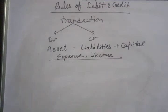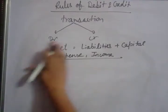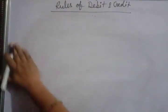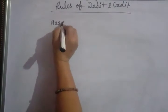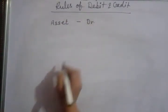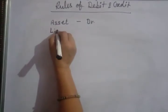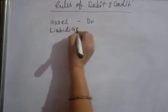Today we will see when assets have to be debited and credited. There are some simple things you should keep in your mind. It is a simple topic, a small topic, but it is very important. We will practice this. Assets always have a debit balance. Liabilities always have a credit balance.